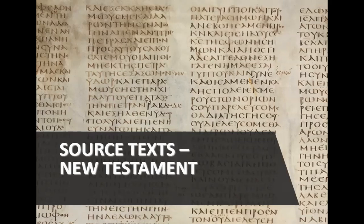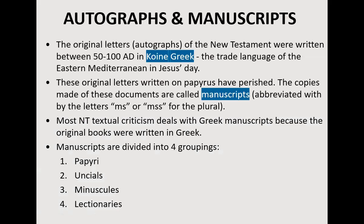We're going to be looking at the source texts for the New Testament. The original writings, what we call the autographs, were written between 50 and 100 AD, all in the first century, in Koine Greek — the common Greek. It was the trade language of the Eastern Mediterranean in Jesus' day, pretty much like English is a trade language today. The original letters were written on papyrus, and obviously we don't have those anymore. Papyrus is not very durable, especially in poor climates.